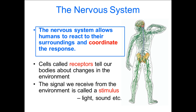In order for us to pick up a change in the environment, we need a set of cells or an organ which can actually detect that change, and those types of cells or those organs are called receptors. You are all probably aware of them — your eyes, your ears, your nose, the pressure sensors in the skin — and they detect changes in the environment. A change in the environment is also known as a stimulus, and that can be something like light and sound. So if there is a change in the light, that is picked up by your eyes, which is the receptor.